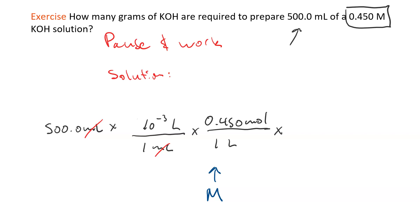Finally, we multiply that by the molar mass of KOH. So in one mole of KOH, there are 56.16 grams of KOH. And so when I multiply all of this out, I get my answer: about 100 times 10 to the negative third times 0.45 times 56.16, and I get 12.6 grams of KOH.